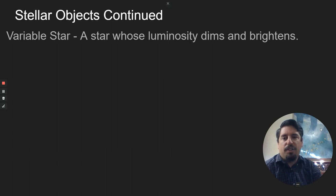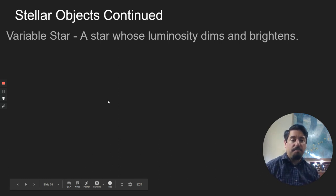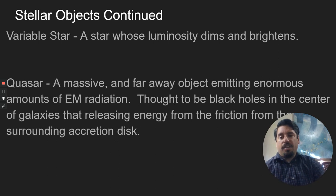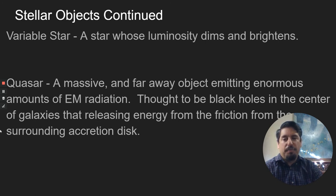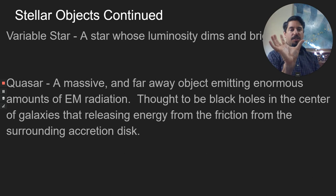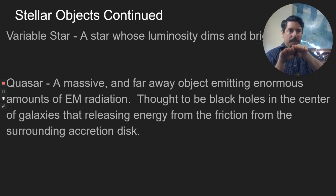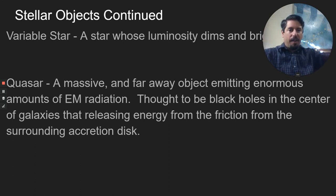A variable star is a star whose luminosity dims and brightens. There are several variable stars, and they just get dark and then get bright — it can happen over days, months, or years. Quasars are massive and far-away objects that emit huge amounts of radiation. We think they might be black holes at the centers of galaxies releasing energy from the friction of the surrounding disc. If you have a black hole pulling everything in, as the stuff swirls around it's rubbing together, and that stuff outside the black hole can still go out. We think that might be the source of quasars, but we're not sure.